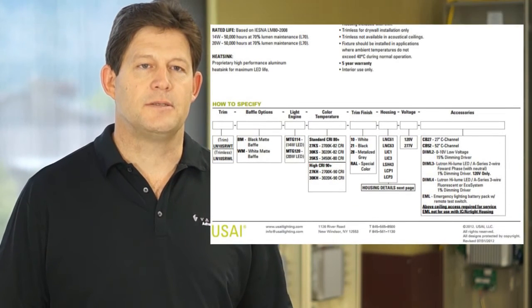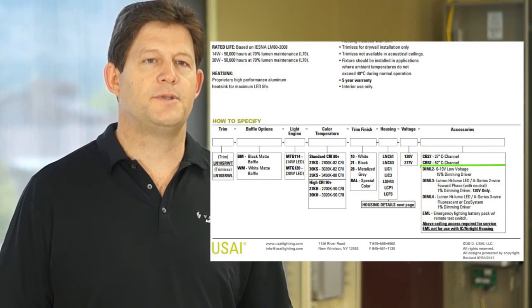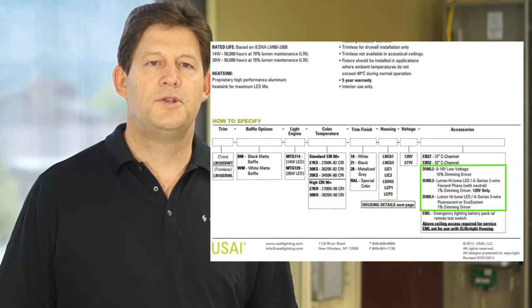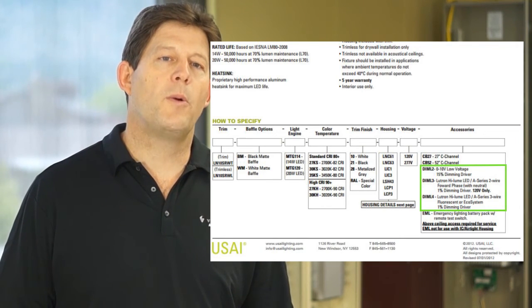Sometimes you have options. This particular product example has three dimming options, 0 to 10 volts, 2-wire forward-phase, or 3-wire Hilum driver.